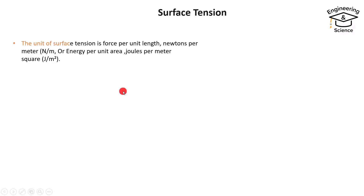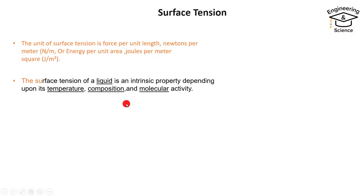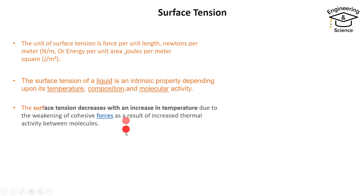Surface tension is expressed as force per unit length — Newtons per meter — or energy per unit area — joules per meter squared. The surface tension of a liquid is an intrinsic property depending upon its temperature, composition, and molecular activity. Surface tension decreases with increased temperature due to the weakening of cohesive forces as a result of increasing thermal activity between molecules.